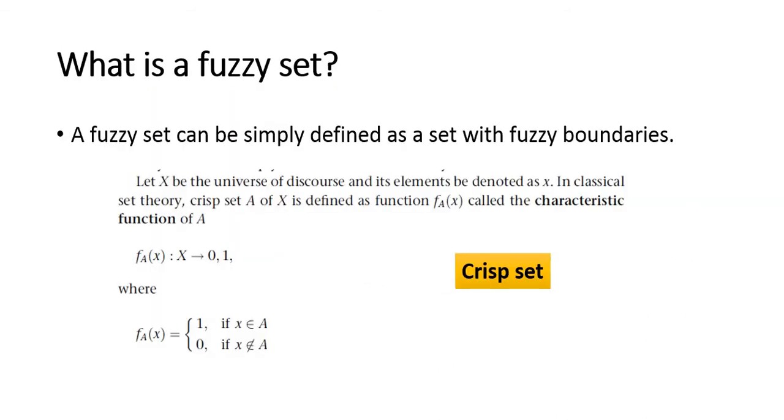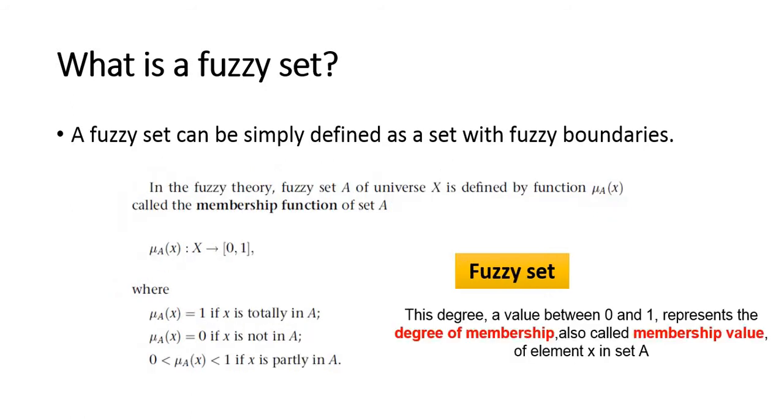What is a fuzzy set? A fuzzy set can be defined as a set with fuzziness or fuzzy boundaries. Let X be the universe of discourse with elements denoted by x. In classical set theory, a crisp set A is defined by a characteristic function. If x is element of A, then it is 1. If not, then it is 0.